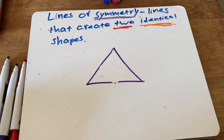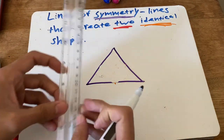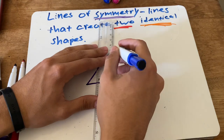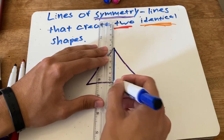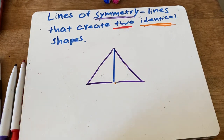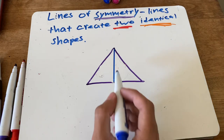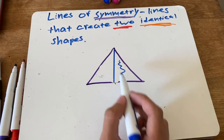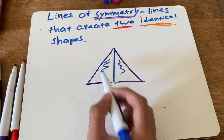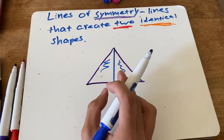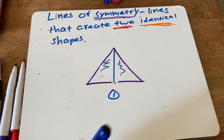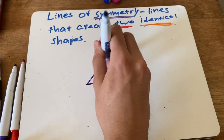I think I found one finally! If I cut it straight down the middle, this blue line is a line of symmetry, because the right side is the same as the left side — same shape, same size. It is a line of symmetry. That's one line of symmetry so far.